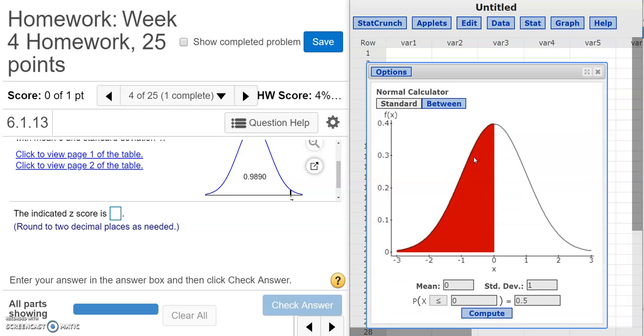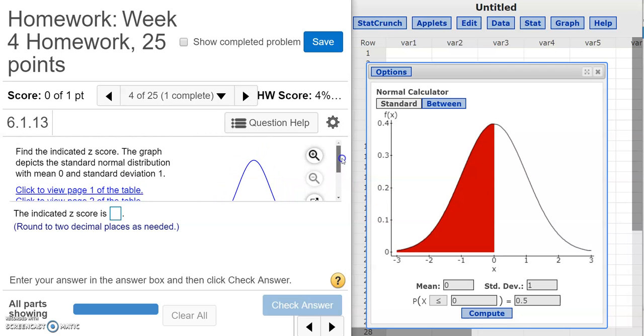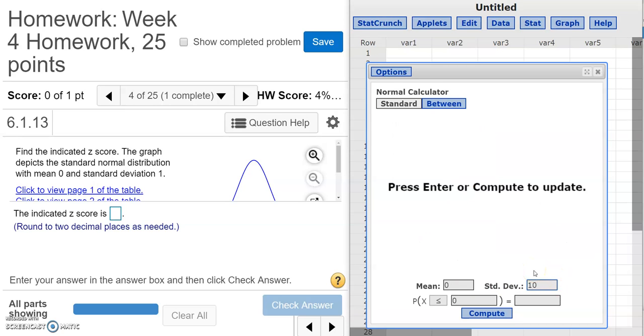StatCrunch is going to open this nice picture for us, the nice bell-shaped curve that is our normal distribution. So the first thing we need to tell StatCrunch is what is the mean and what is the standard deviation of whatever we're looking at. So in this particular question, we were told that this is the standard normal distribution. That means it has a mean of zero and a standard deviation of one. Well, conveniently, that mean and that standard deviation are already here for me, but if the mean and standard deviation were different, I can just go ahead and type in whatever it is right here.